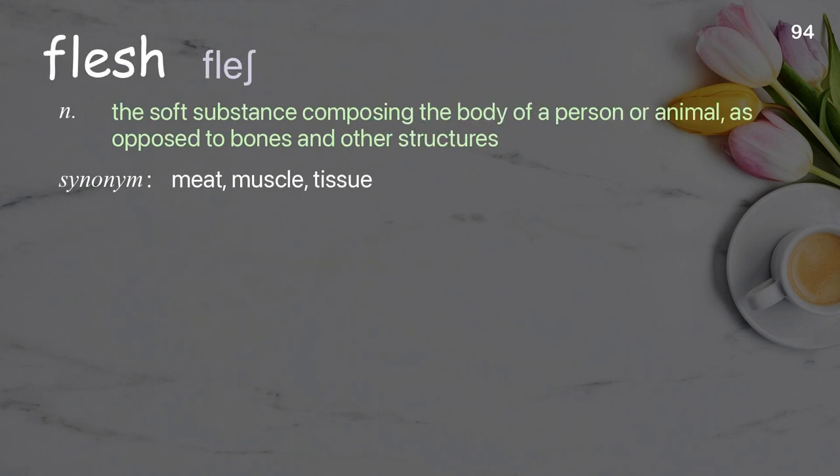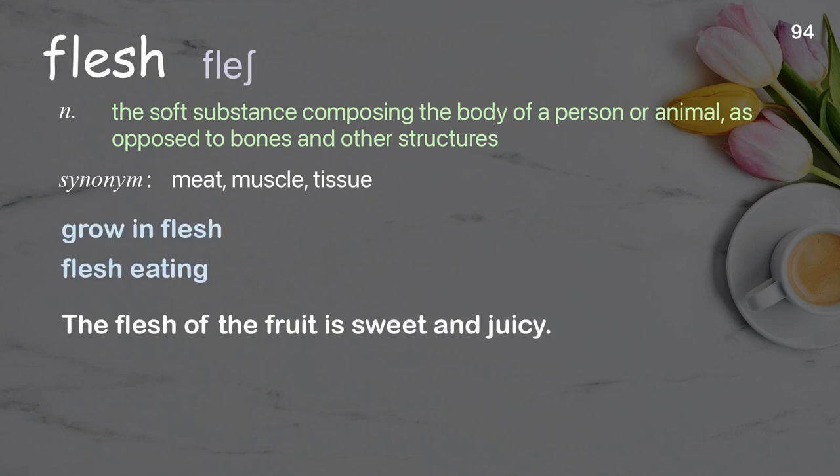Flesh: the soft substance composing the body of a person or animal, as opposed to bones and other structures. Examples: grow in flesh, flesh eating. The flesh of the fruit is sweet and juicy.